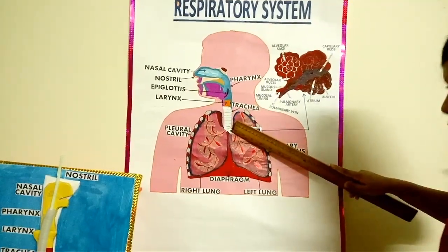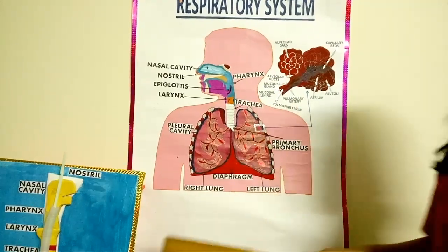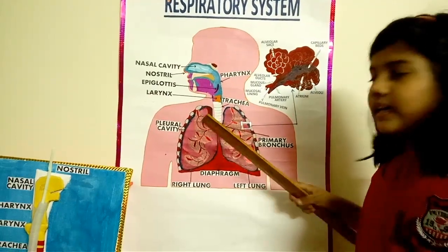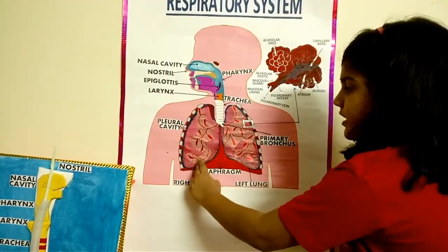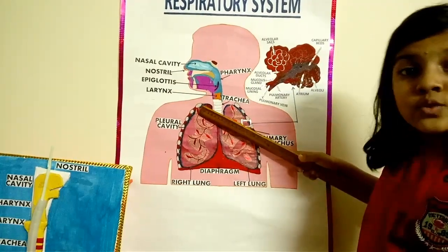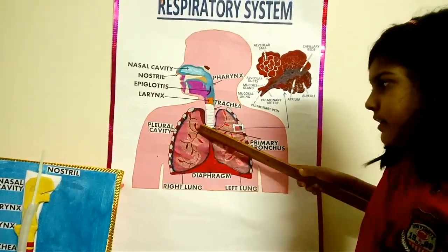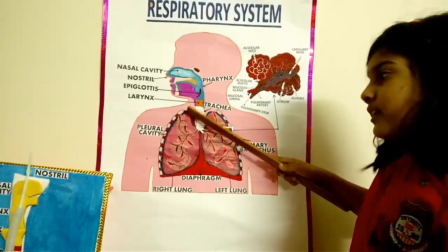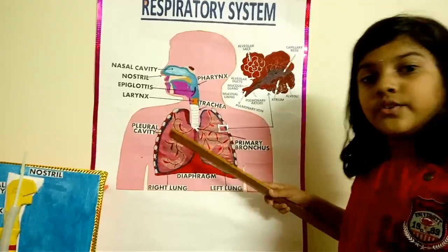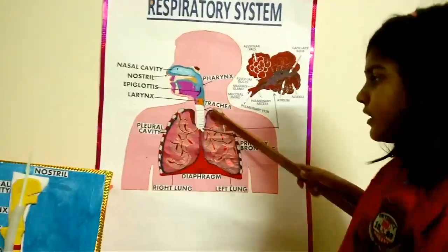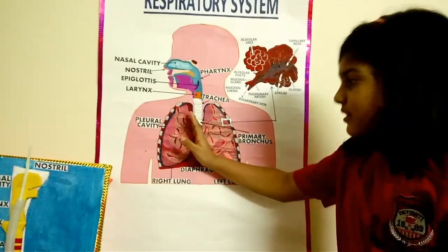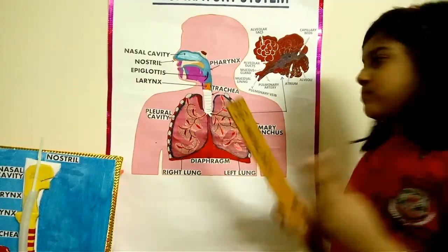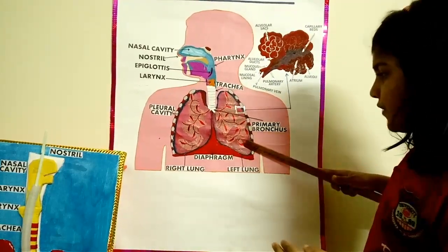Then finally to the bronchi and the lungs. There is so much to learn about the lungs. The right lung has three parts: the right superior, the right middle, and the right inferior. These three parts are called lobes. The left lung is smaller because the heart is there and needs space, so it has only two lobes: the left superior and the left inferior.